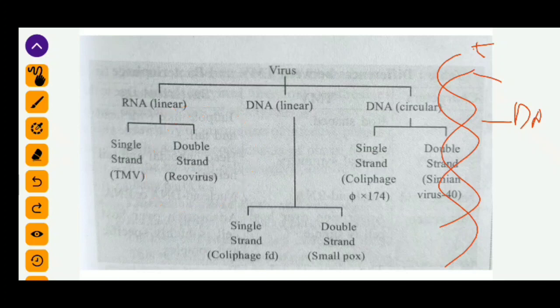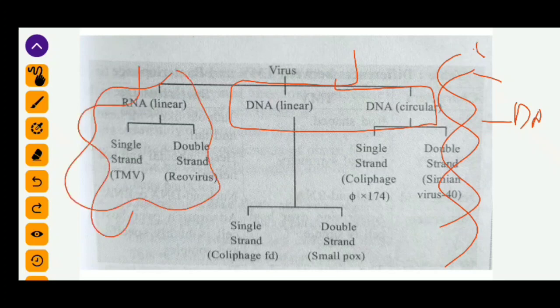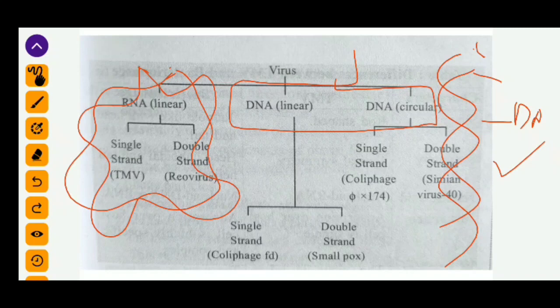DNA viruses are further divided into linear DNA and circular DNA. Linear DNA viruses can be single-stranded or double-stranded. For example, Coliphage is an example of single-stranded linear DNA virus, and Smallpox is an example of double-stranded linear DNA virus. Circular DNA viruses are also divided into single-stranded or double-stranded, for example ΦX174.